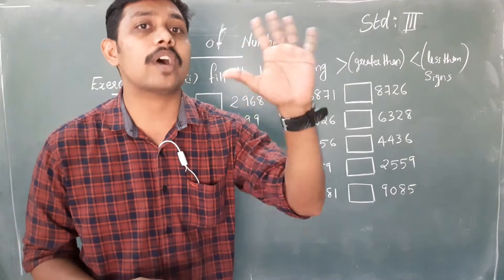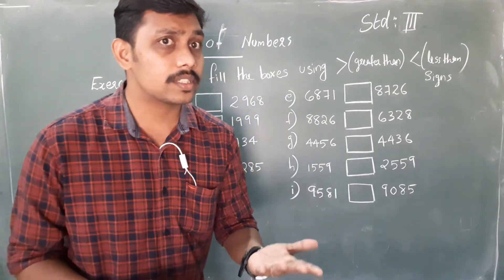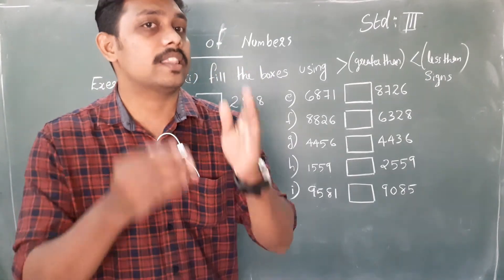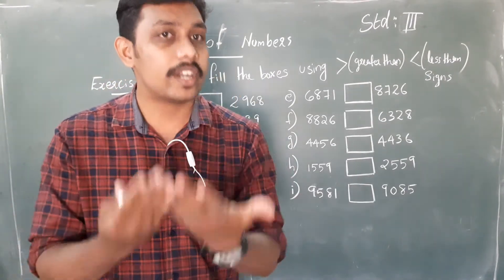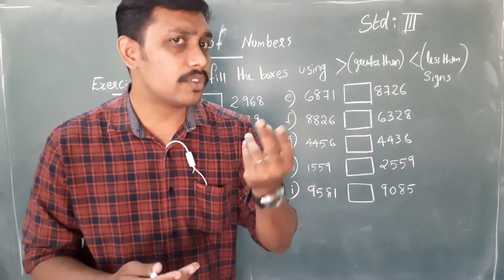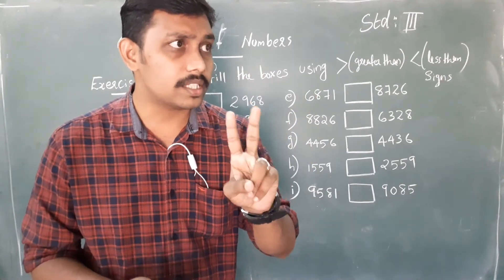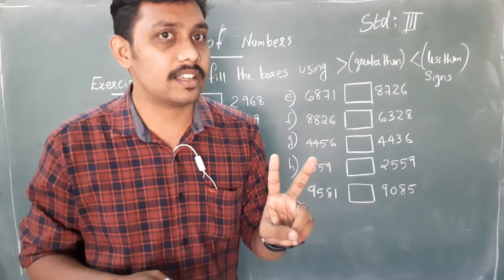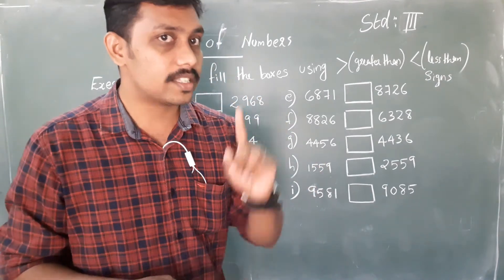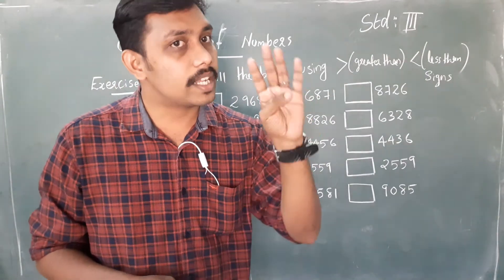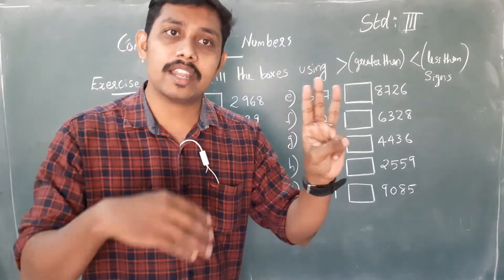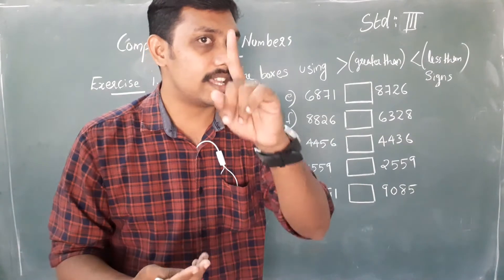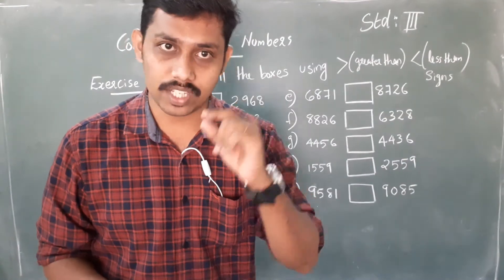How many rules? Five rules. What are the rules? The first rule is: if we have two numbers, the number with more digits is larger. For example, if one number is a three-digit number and another is a four-digit number, the number with more digits is larger. That is the first rule.